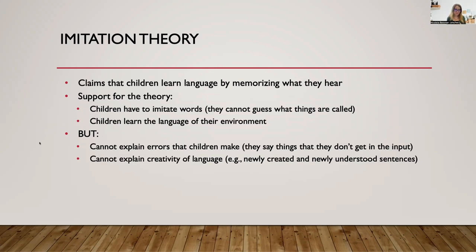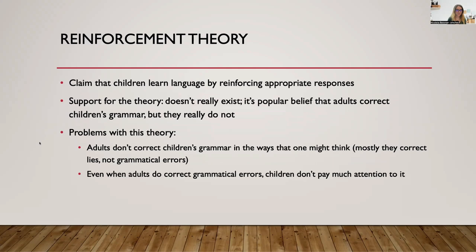When kids start to speak, if you've been around kids, you know that they make errors — errors from the perspective of adult speech. And where did those come from? If they're just imitating, they couldn't have just repeated that. They're saying things that are not from what they got in the input. So that supports the idea that the imitation theory cannot explain how kids learn language.